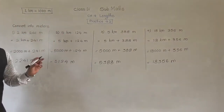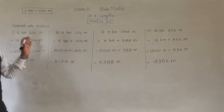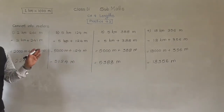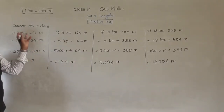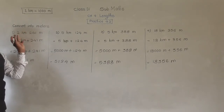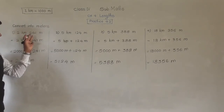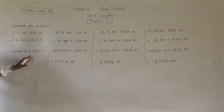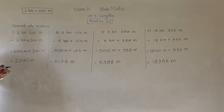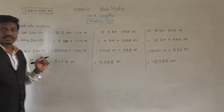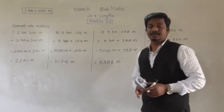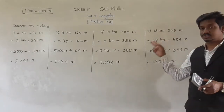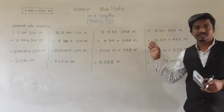So in this way, using these steps, the length given in kilometer and meter can be converted into meter. The part which was in kilometers we converted into meters, and the part which was already in meters we added to that to get the total meters. Now pause this video, write these 4 examples in your notebook, and try the remaining 2 examples yourself.